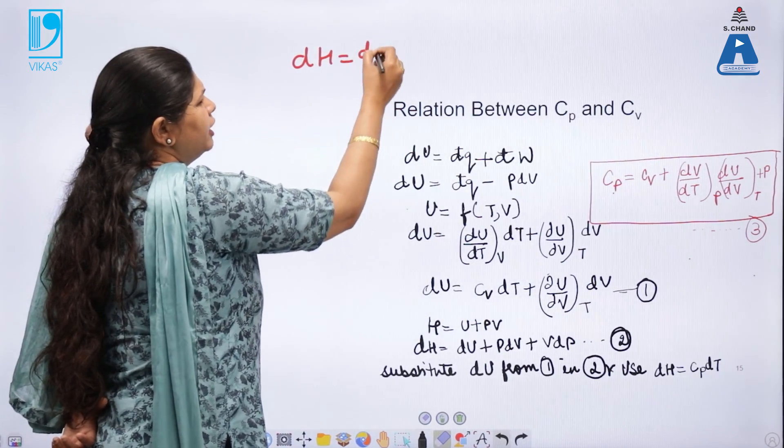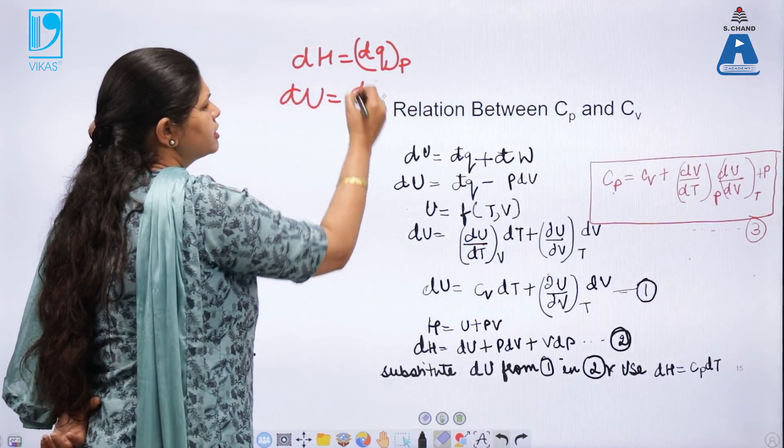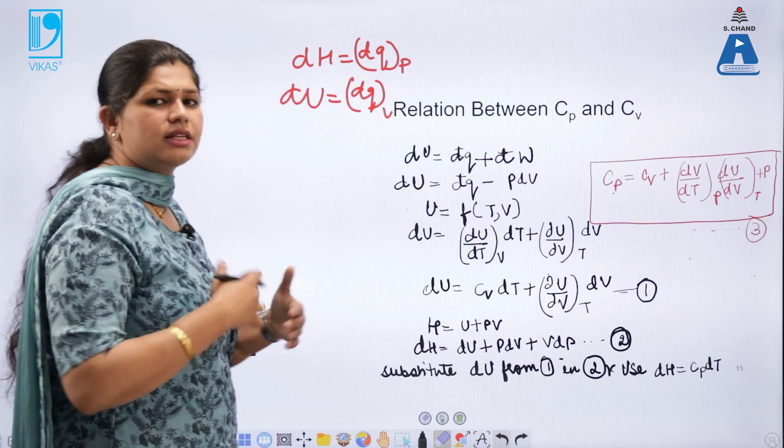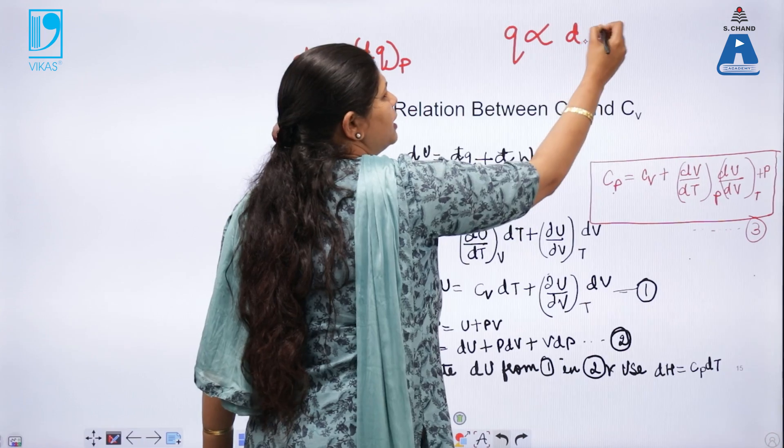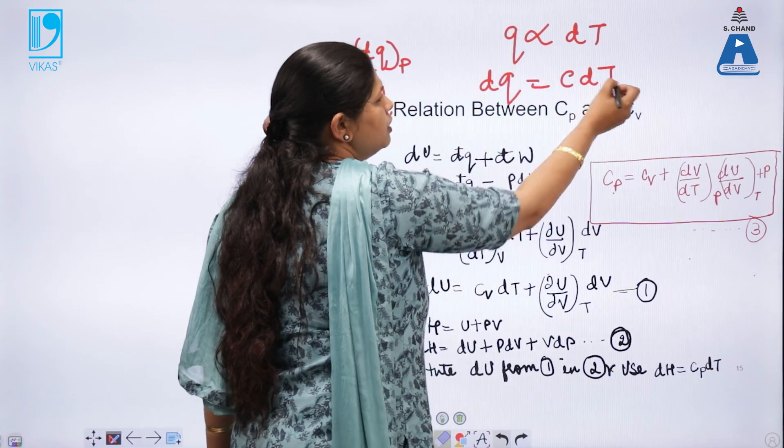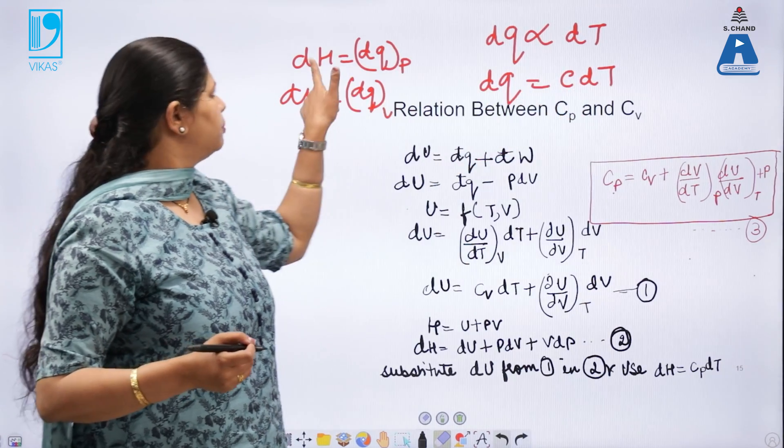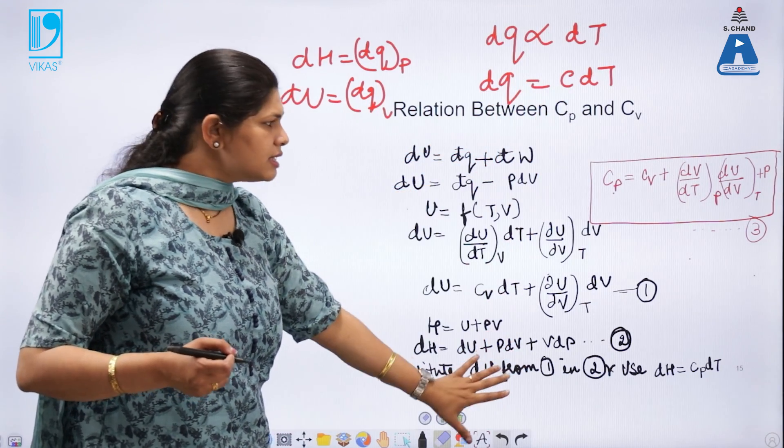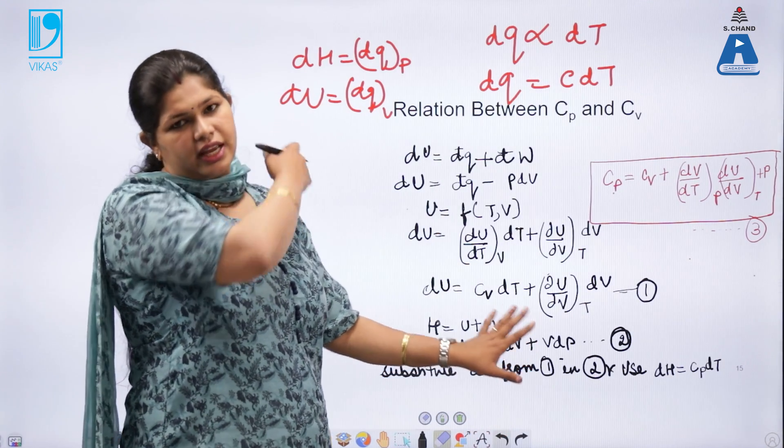So, dH is equal to dQ at constant pressure and dU is equal to dQ at constant volume. So, these are the things that we know. Now, heat capacity is the amount of heat required. So, heat is directly proportional to change in temperature. On removing the proportionality, it becomes C into dT. So, dQ is equal to C into dT. And at constant pressure and constant volume, it will become dH only. So, dH equal to Cp dT, dU equal to Cv dT.